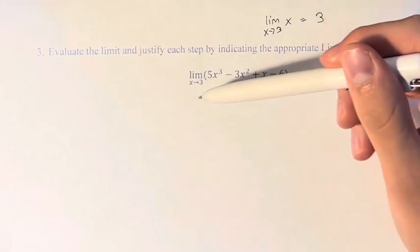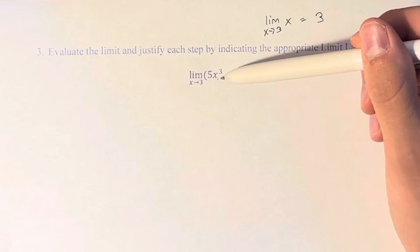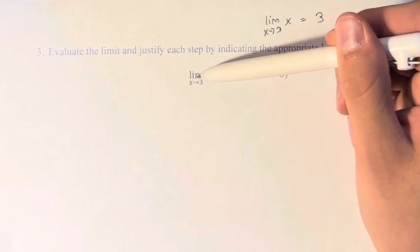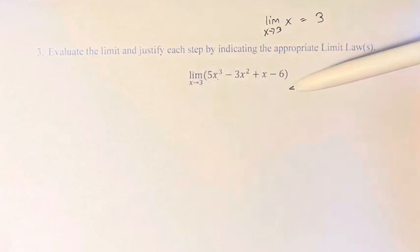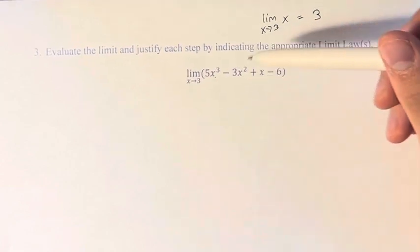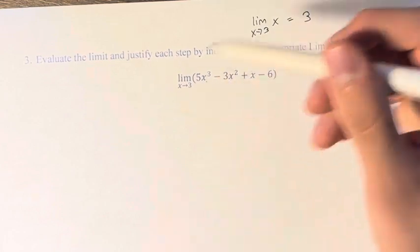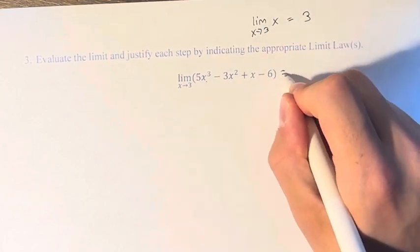Now, typically we would just be comfortable plugging in 3 here, because there's no division by 0 that we have to potentially worry about, or taking the square root of a negative number. We just have a polynomial, so we would just plug it in directly. However, it's asking us to use the limit laws, so that's what we're going to do.